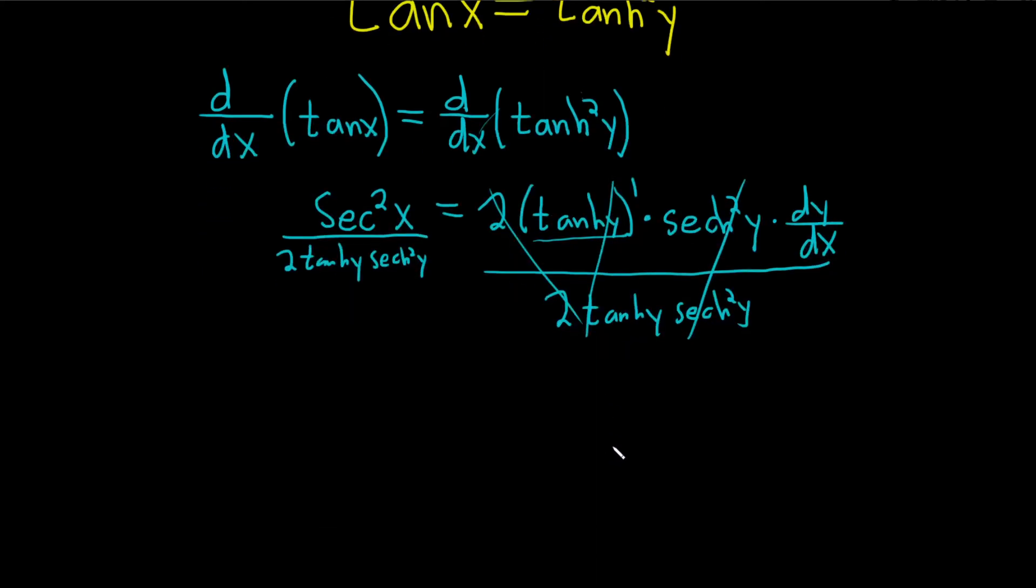So we're left with dy/dx equals, let me write it like this, one half. Up top, we have a secant squared of x. And on the bottom, we have the hyperbolic tangent of y times the hyperbolic secant squared of y.